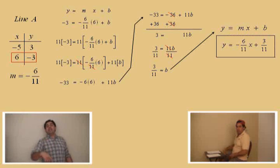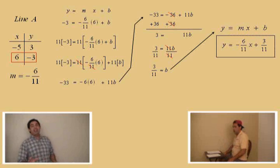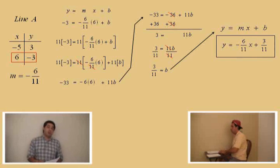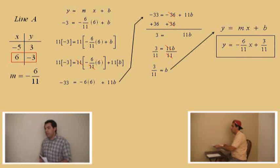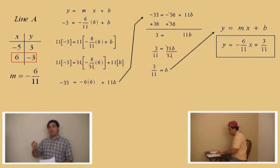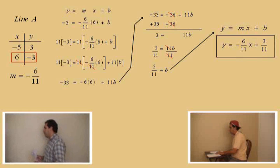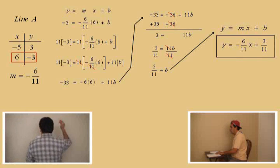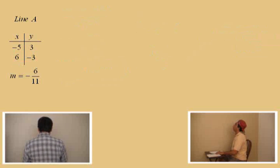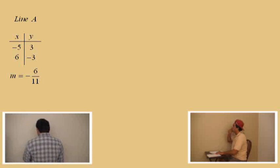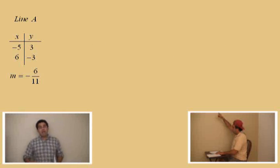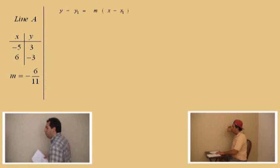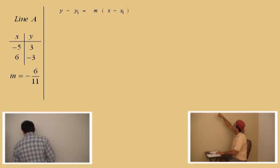Let's do another one. Wait, I forgot — this was the slope-intercept formula approach. And now we're going to use the point-slope formula approach, meaning we're going to find the equation of the line in slope-intercept form by using the point-slope formula. Let's go ahead and relist our information. There's line A. There's our point. And again, with the point-slope formula, you have to choose one of the points. We'll use the same point: six comma negative three.